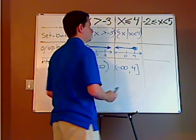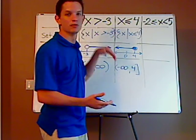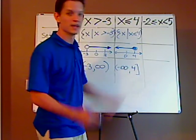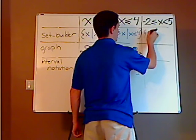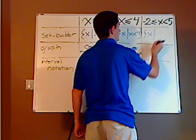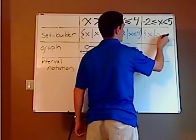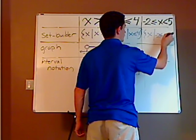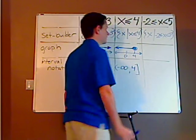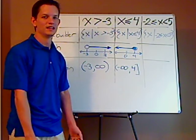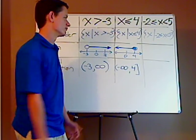All right, so here, somewhat different, but again, set builder notation is going to be pretty much the same. So open braces, X, and then you just write it out, so it's negative two less than or equal to x less than five. I'm going to write it a little small so that it can fit. Just like that, that's it. It's really straightforward.